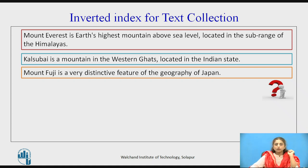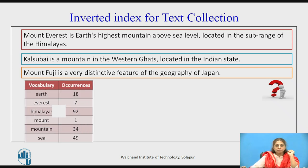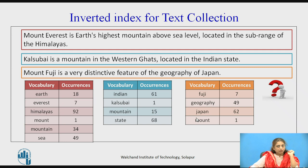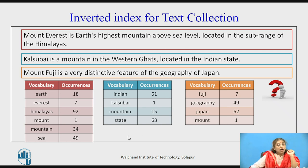We have seen the inverted index for a single document. Now, how to do it for a text collection? Assume there are three documents. Pause the video and try to find the inverted index for every file separately first. This is the inverted index for the first document, for the second one, and for the third one. For every document, some keywords are identified and associated with their occurrences.